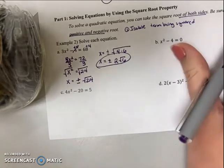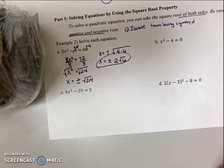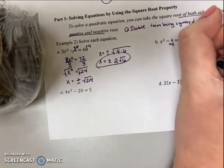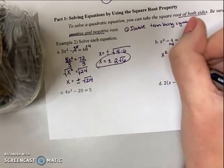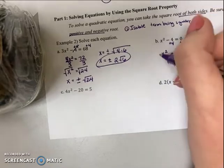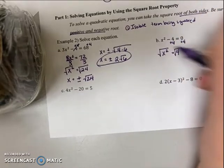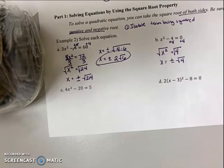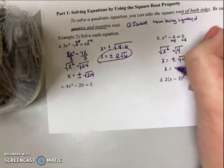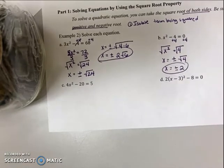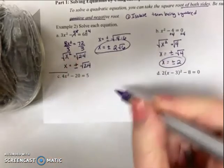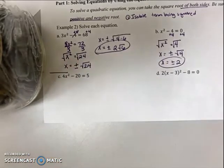Part B: isolate the term being squared by adding 4 to each side, giving x squared equals 4. Take the square root of both sides and put plus or minus: plus or minus root 4. Since 4 is a perfect square of 2, the two solutions are positive 2 and negative 2. I'm just about out of time, so in the part 2 video we'll start with part C and example 2.